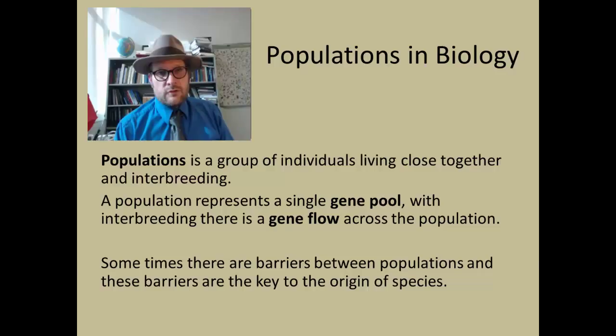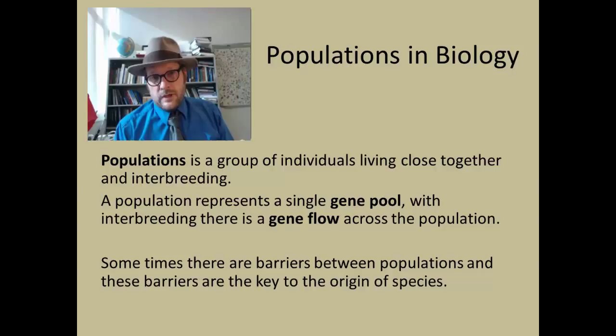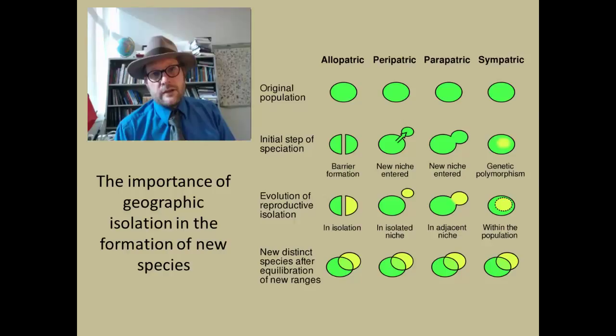These barriers are often the key to the origin of species. Evolution has shown us that geographic isolation of populations is one of the key mechanisms to produce new species. There are different types of speciation present in the natural world: allopatric, peripatric, and sympatric isolation.